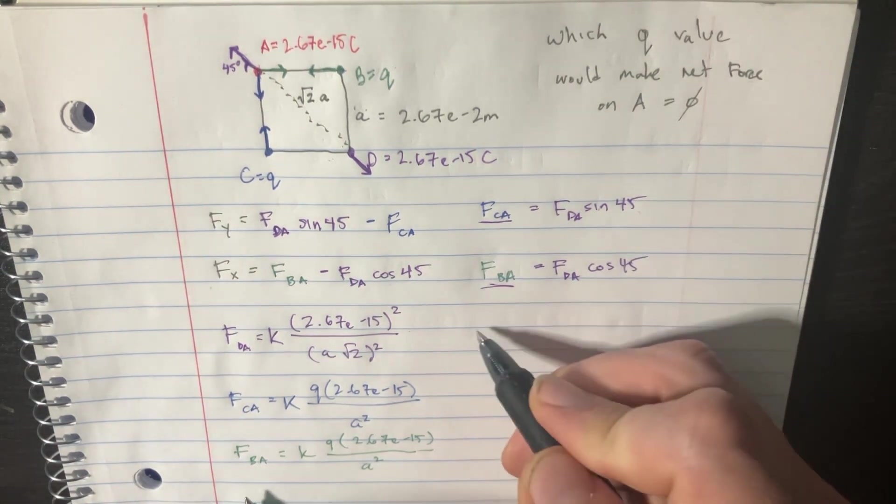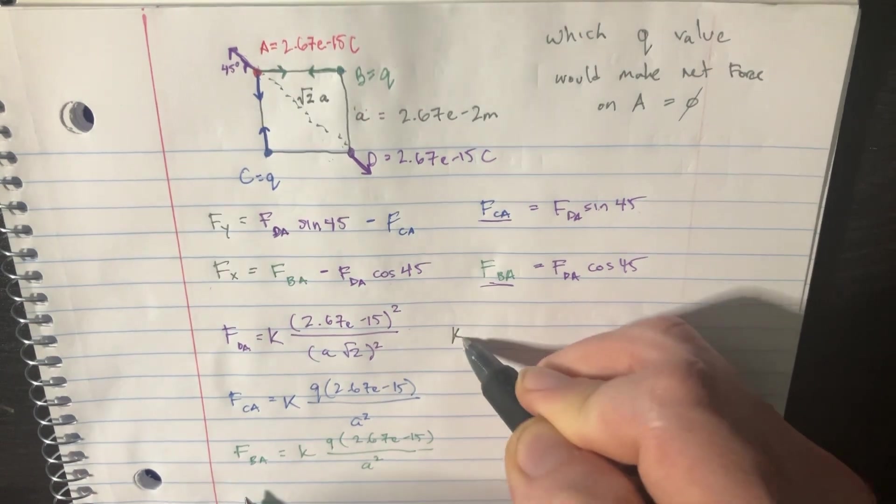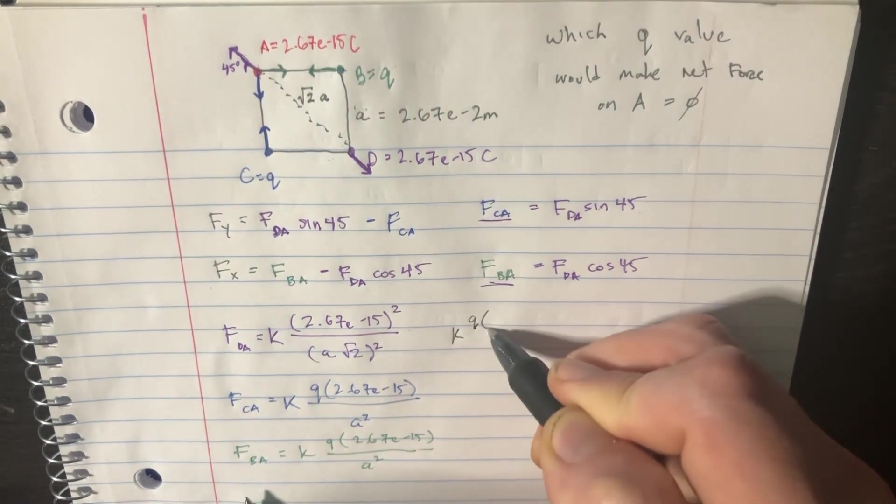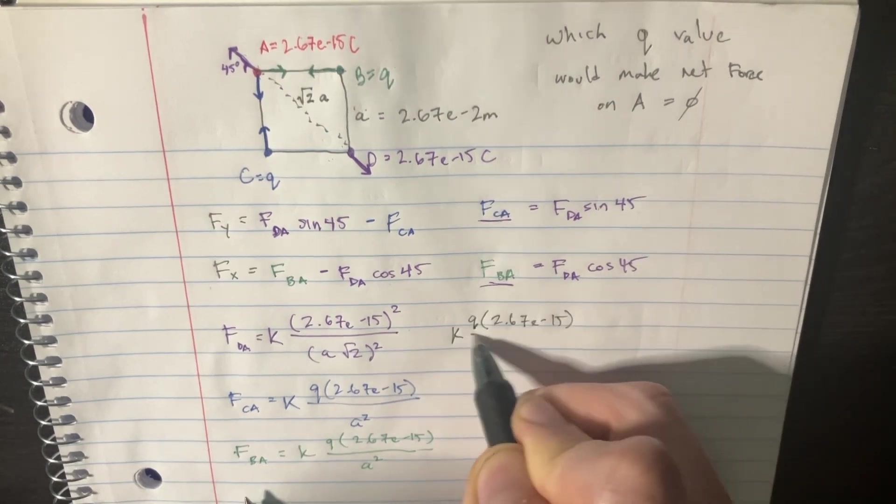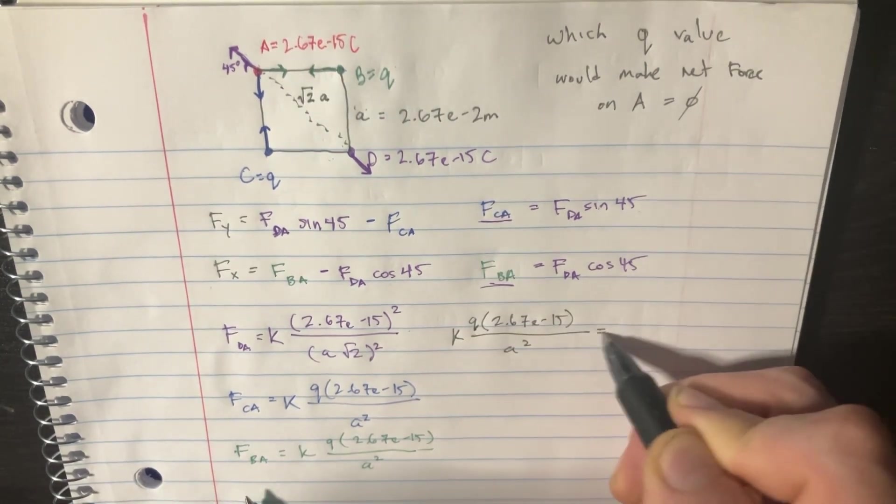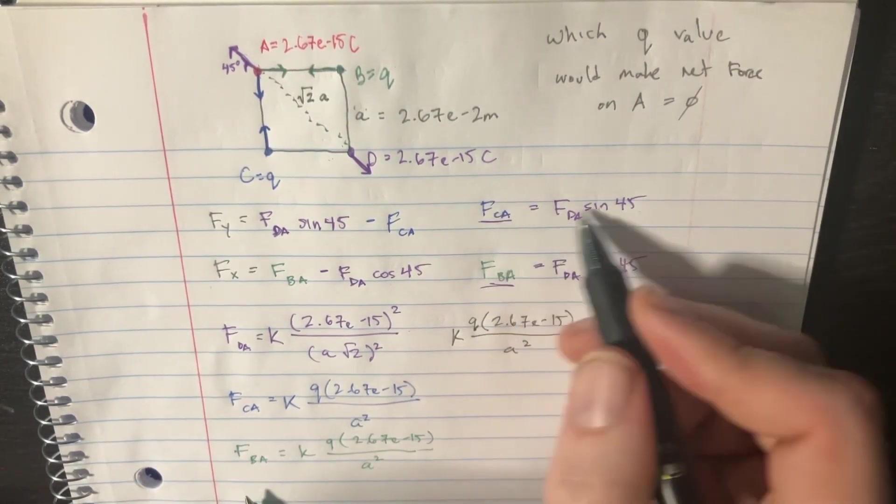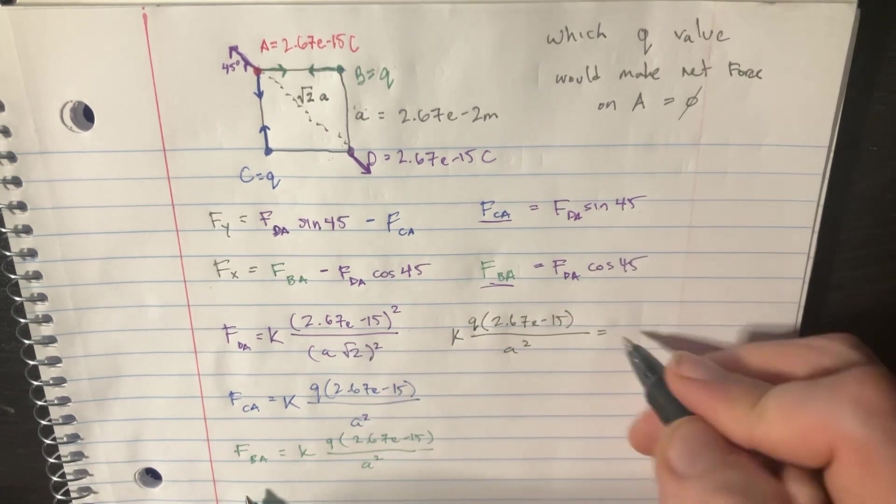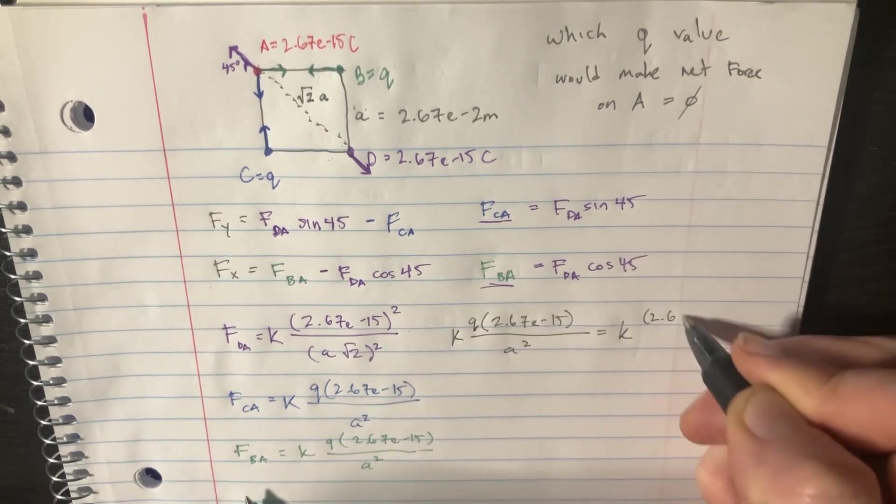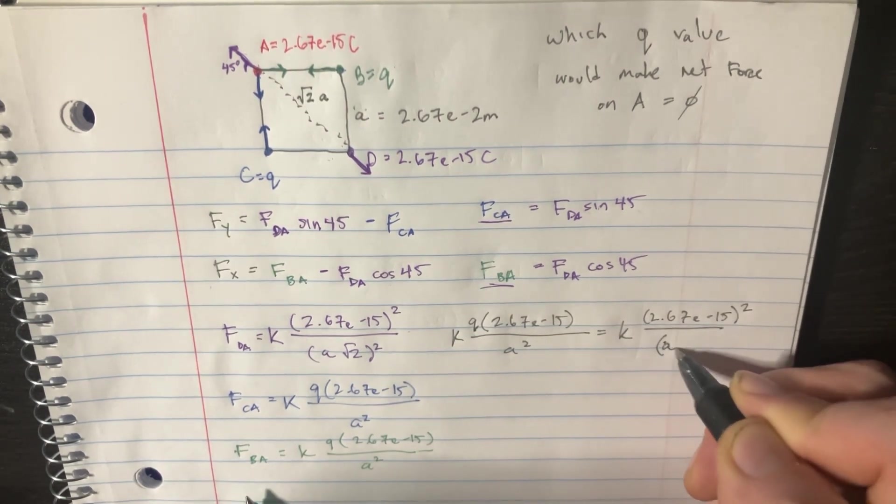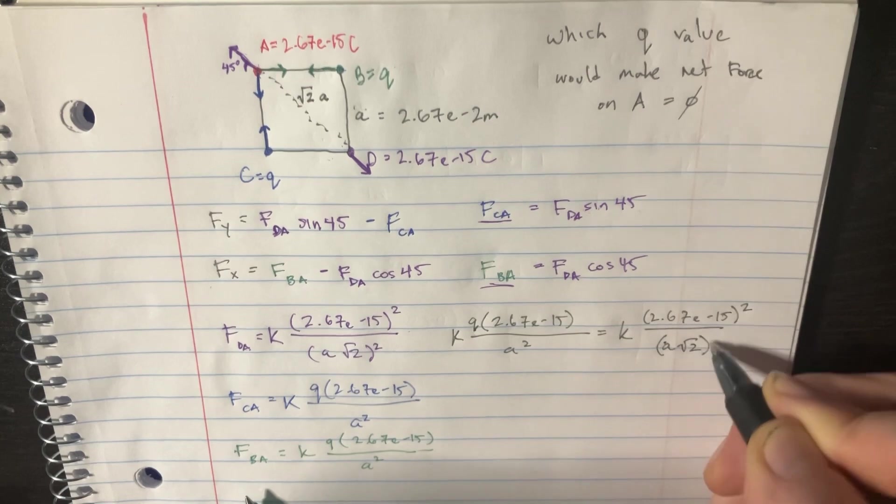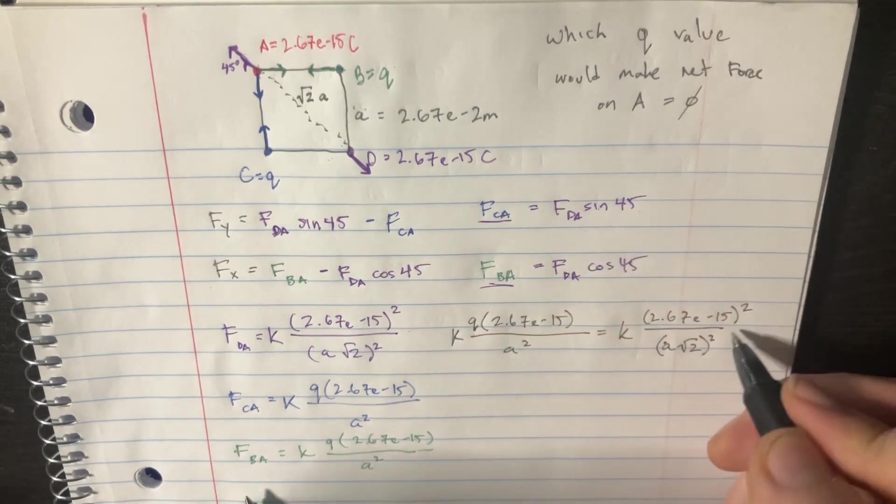So let's try doing it on this side. We'll go K, oh, this is Q actually, 2.67 E to the negative 15, divided by A squared, is equal to this one, which is going to be K times 2.67 E to the negative 15 squared, over A squared of 2 squared, and this is sine of 45.